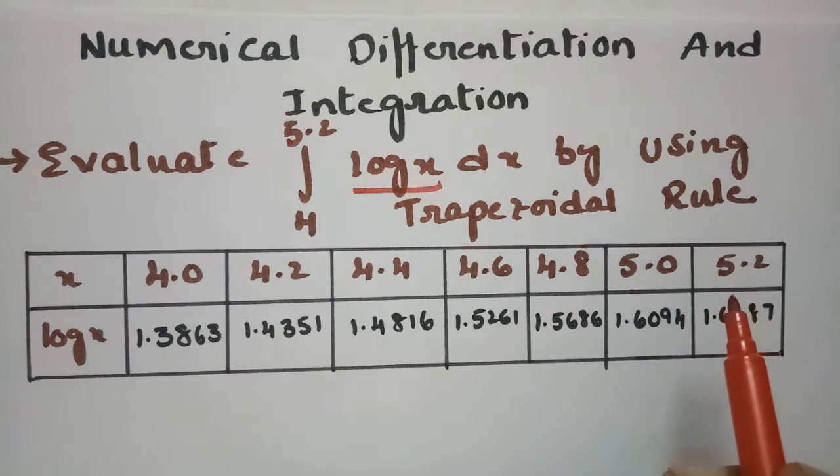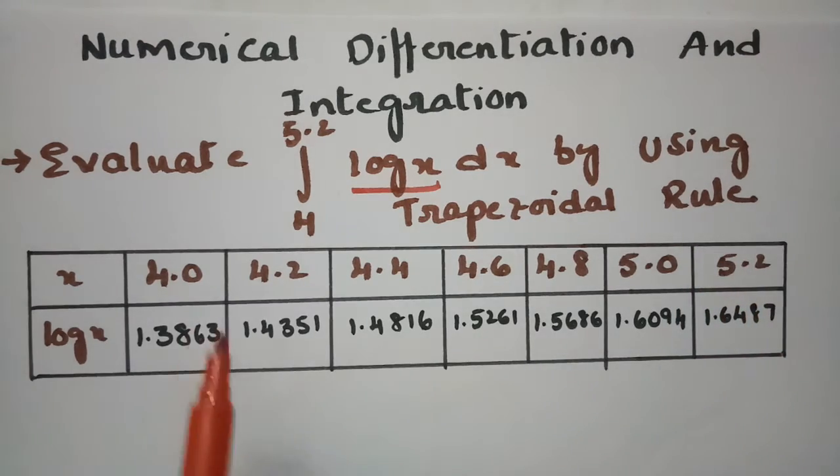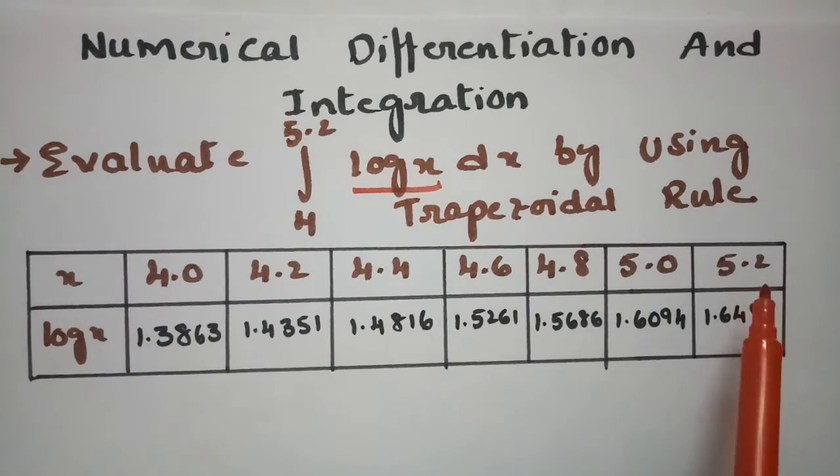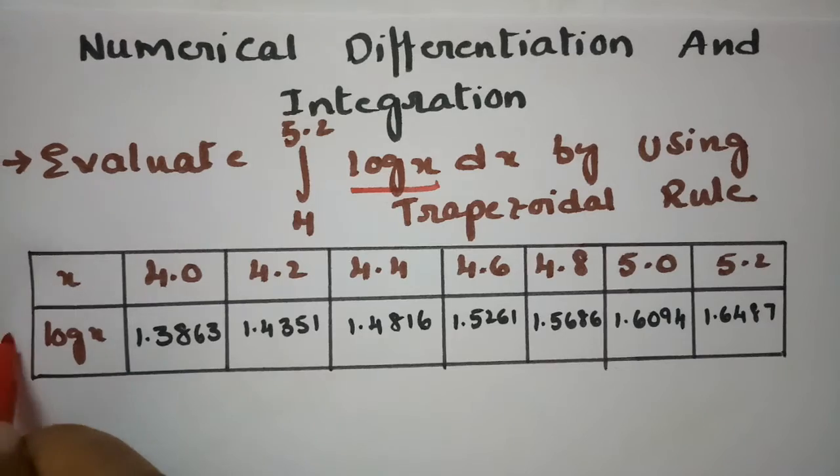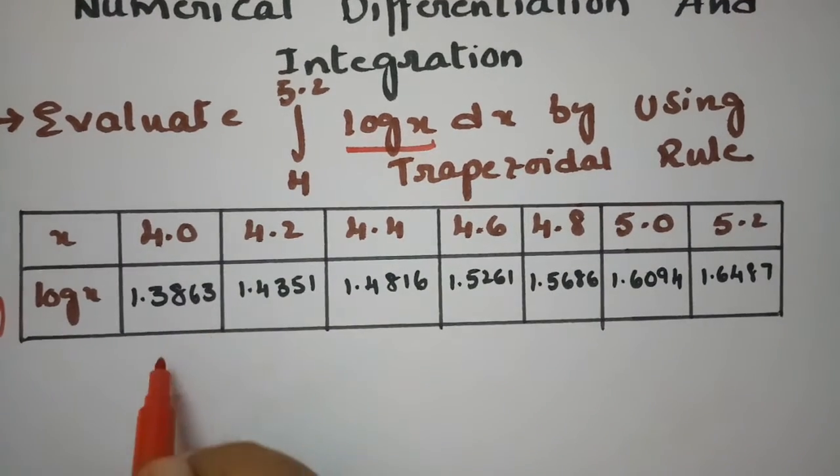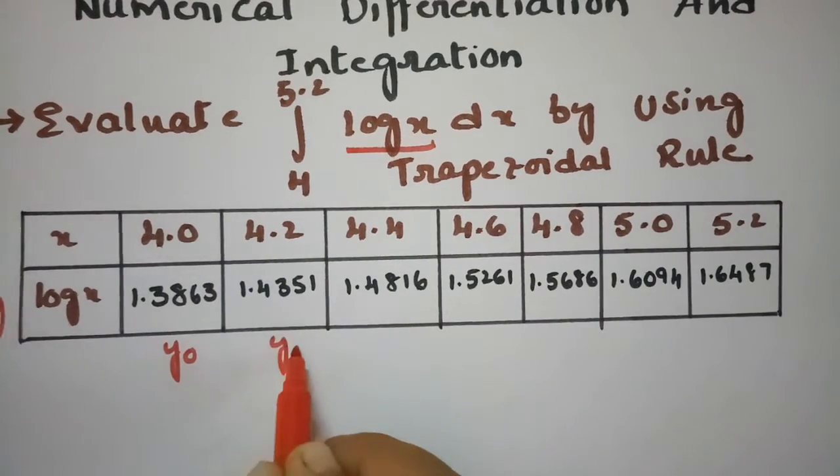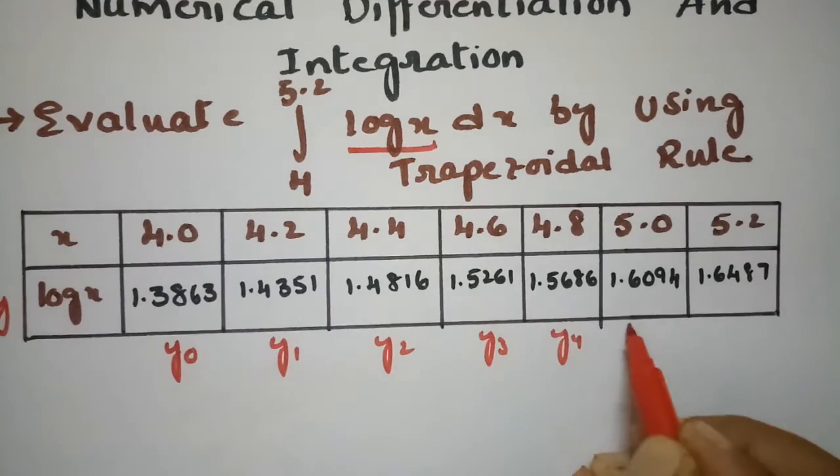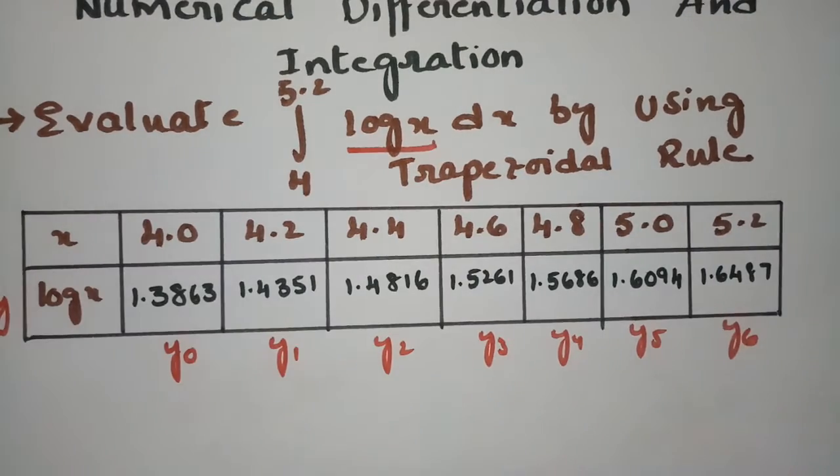Here the table is also given in the question. So the initial value is 4 and the final value here is 5.2 and this is nothing but the y value. So I am writing this value as y naught, this is y1, this is y2, this is y3, this is y4, y5 and y6.